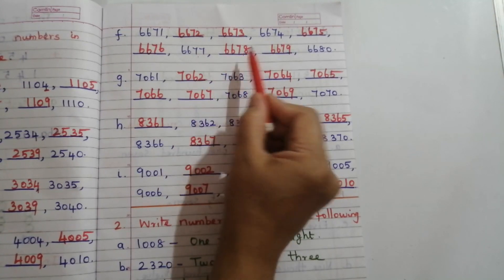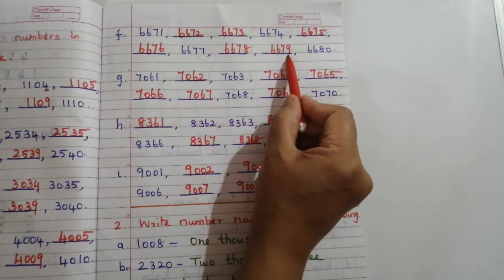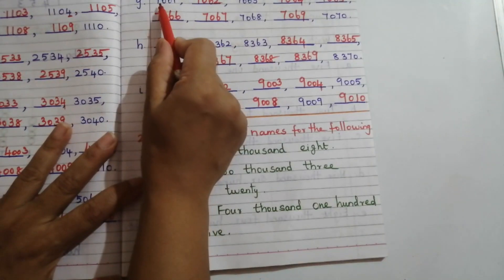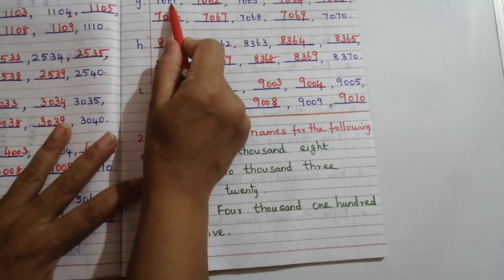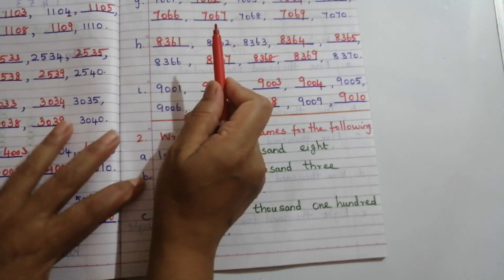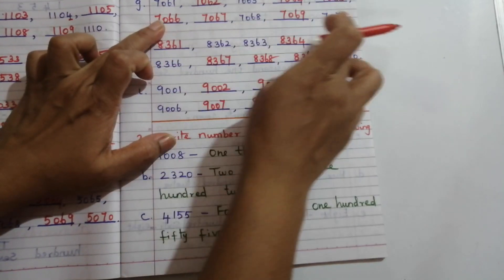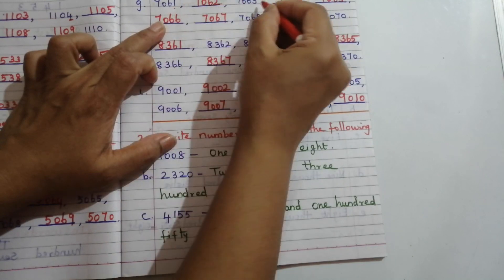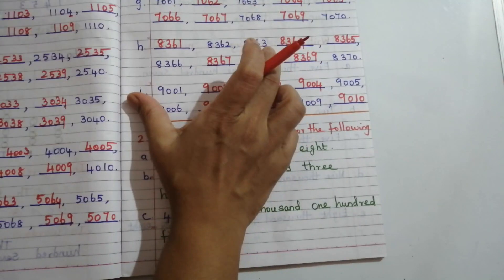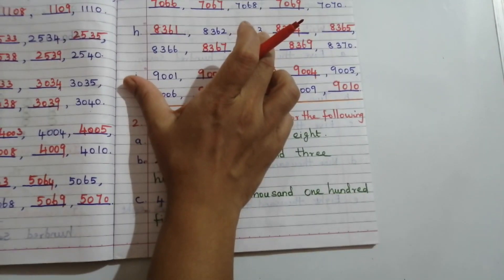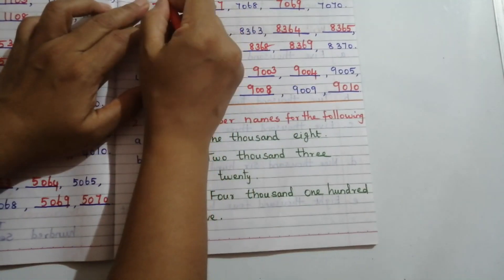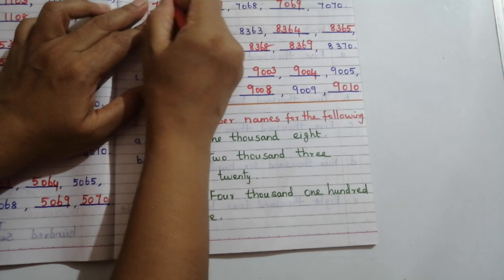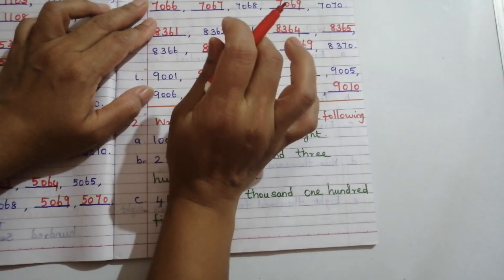Likewise, after 6677 comes 6678, 6679. Problem G: 7061 — if we check the numbers, the change occurs only in the ones place. So you can write the first three digits as they are and only increase the ones place value.